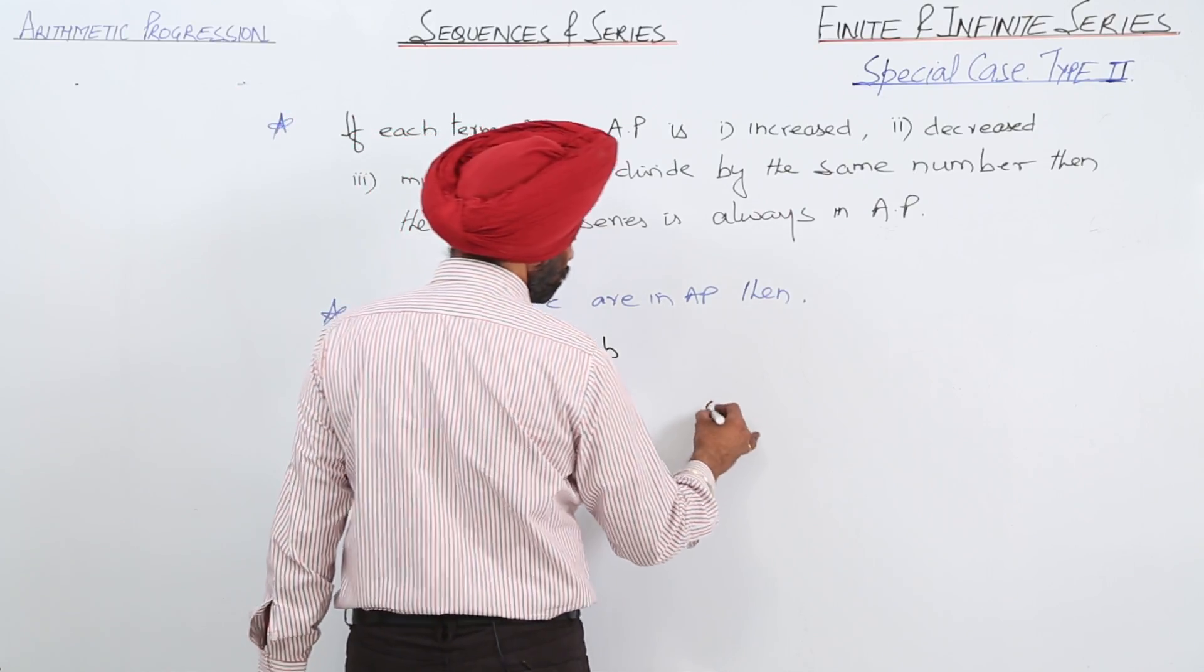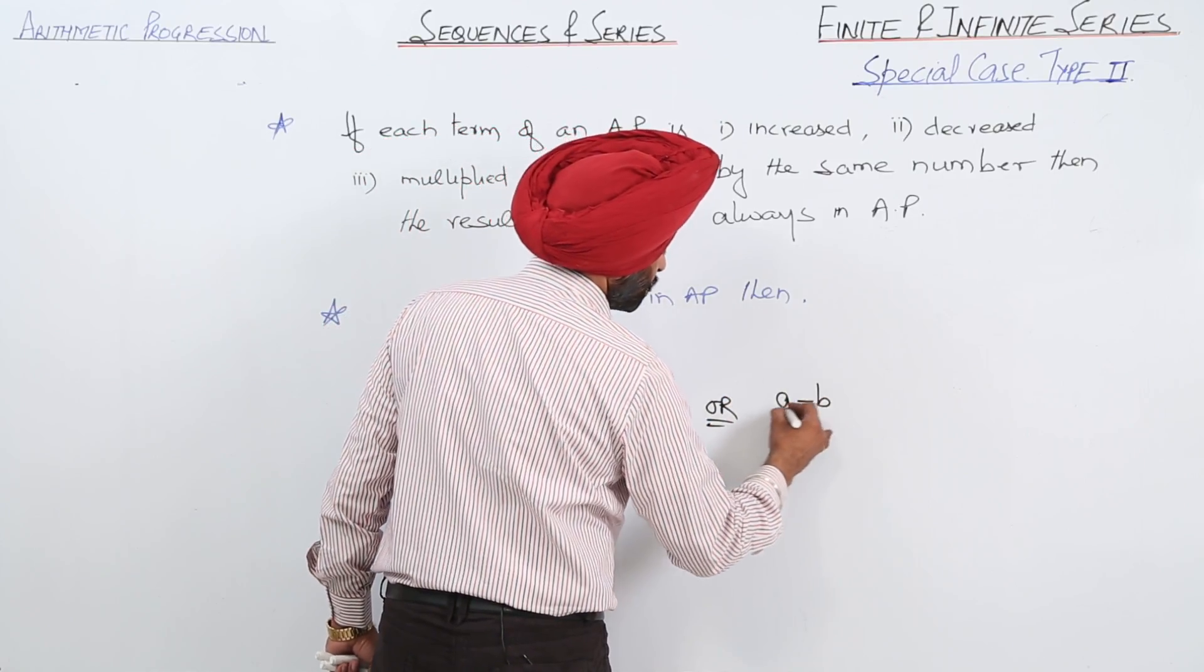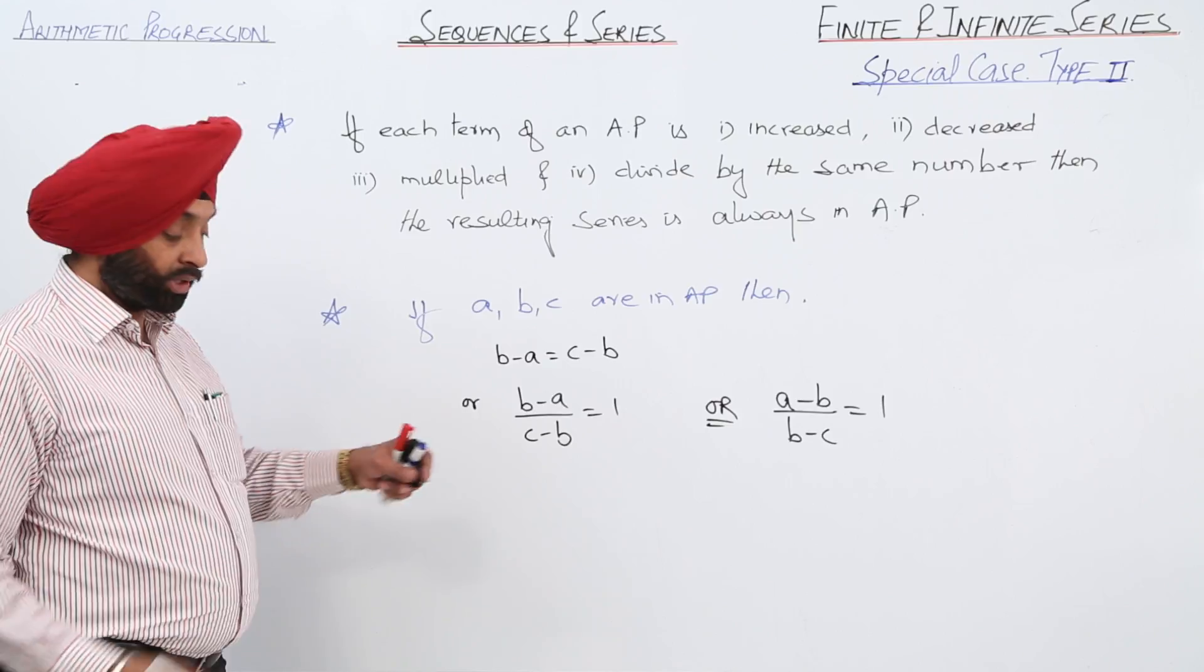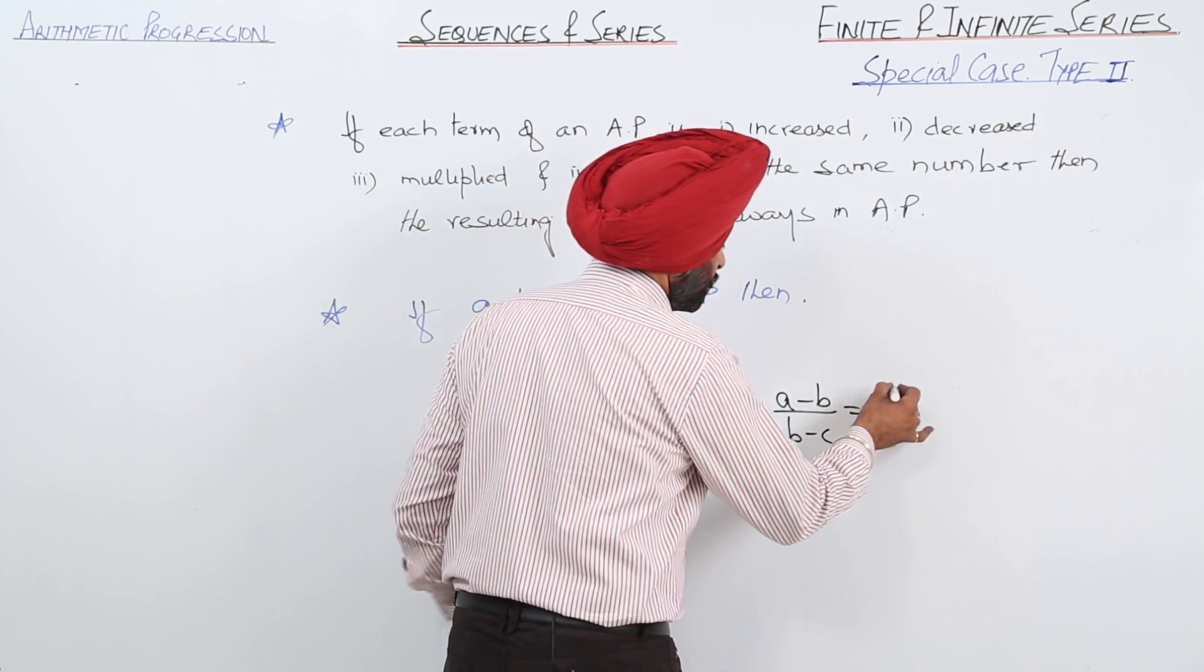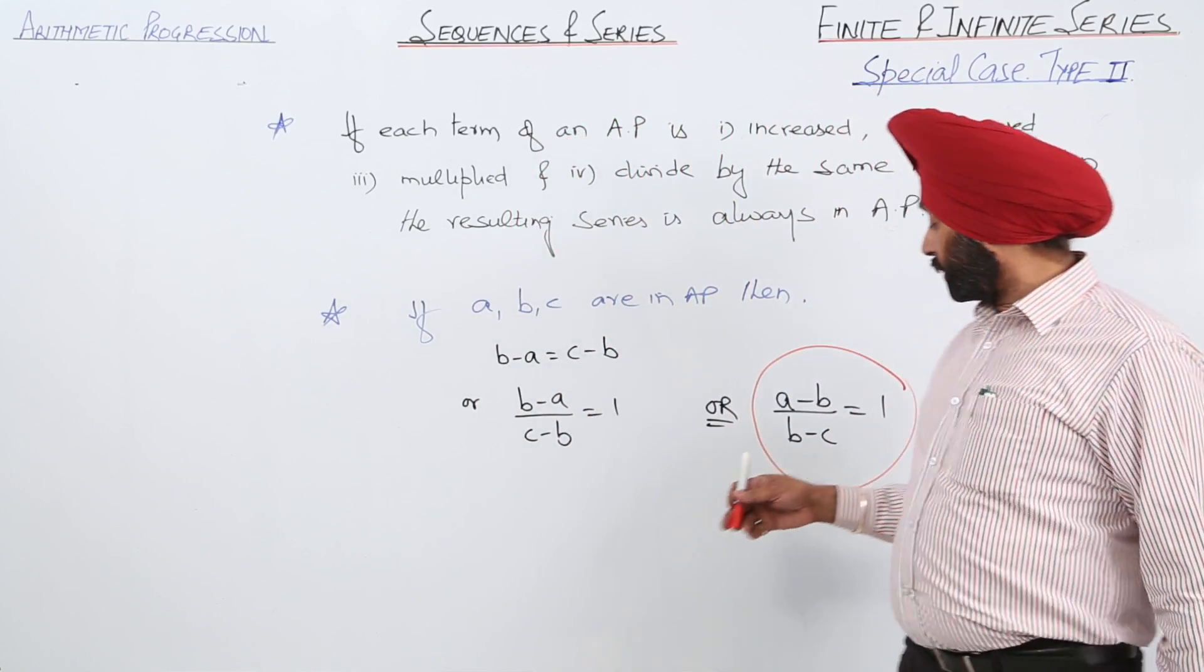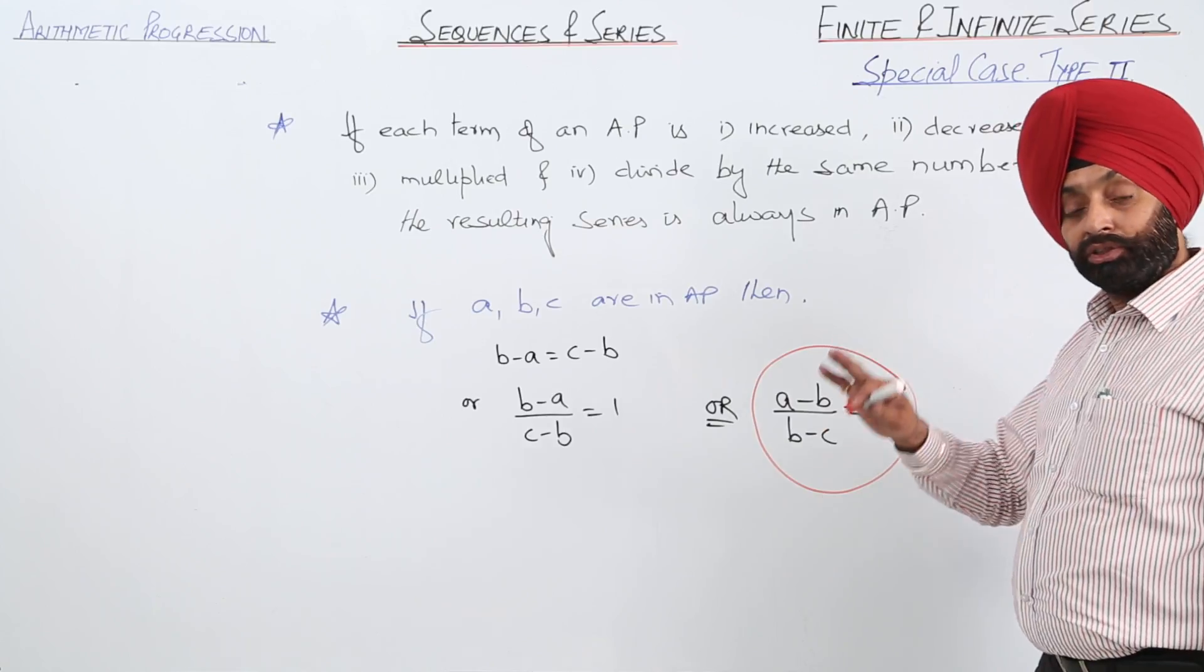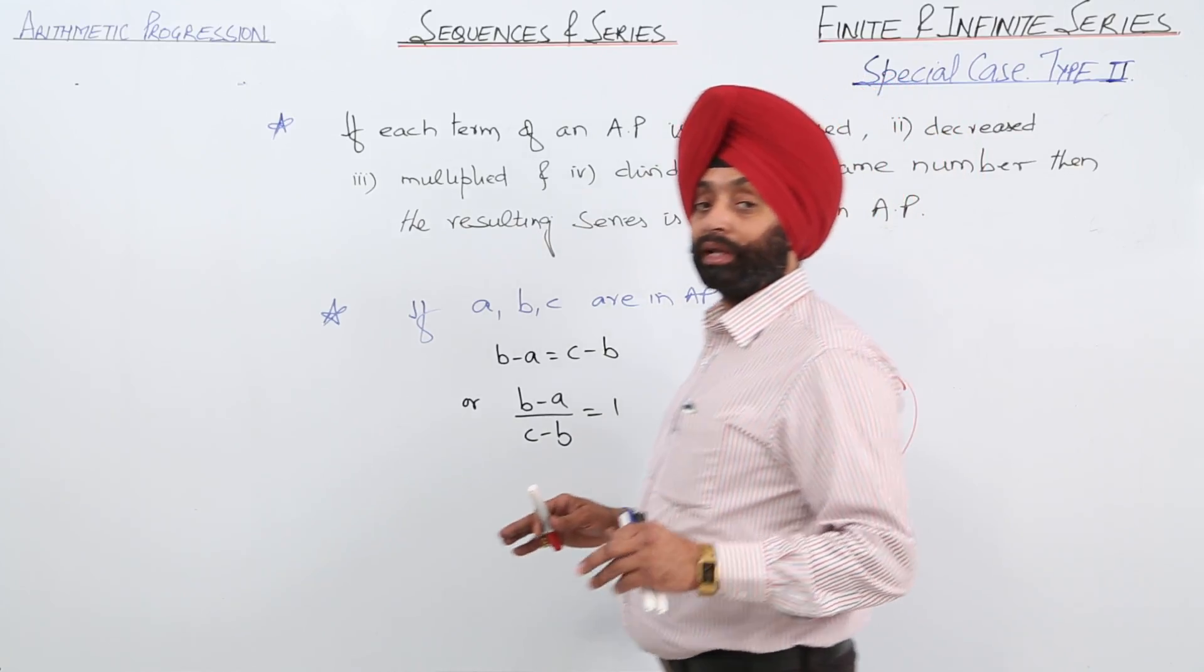Or we can write (A-B)/(B-C) equals 1, changing the signs. The main thing is: if 3 numbers are in AP, we can write it like this. First number minus second number divided by second number minus third number always equals 1. This is the special case for type 2.